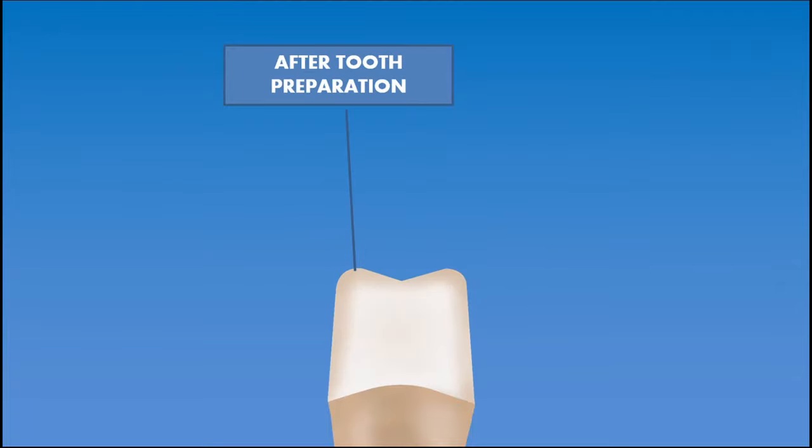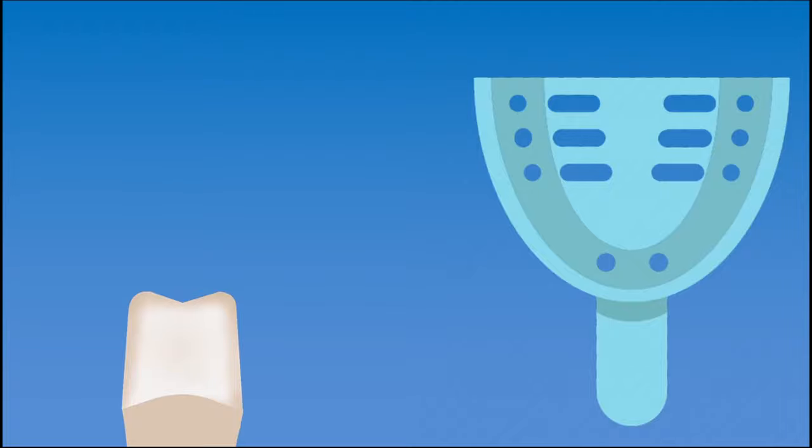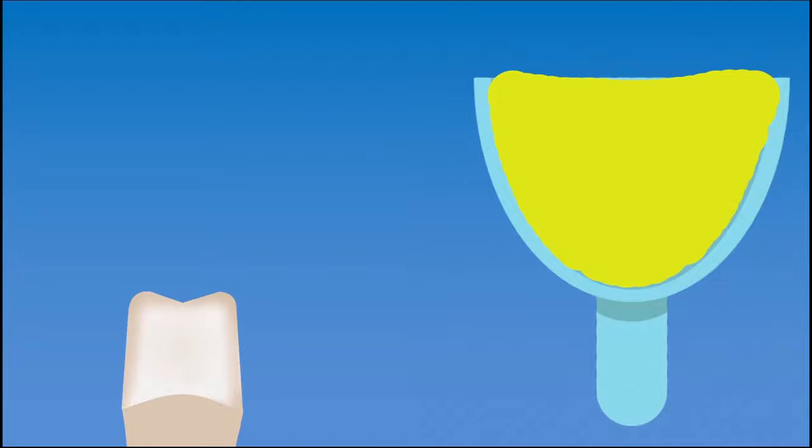The first step is to do the tooth preparation so that the tooth can receive a crown. All the fundamental principles of tooth preparation should be followed. Once the tooth preparation is complete, an impression tray is selected which fits the arch size of the patient's jaw. Once the tray is selected, impression material is loaded in the impression tray, then it is placed over the prepared tooth in the patient's mouth to obtain an impression. Die stone is mixed and poured without any air entrapment to get a replica of the prepared tooth. This is called a die.